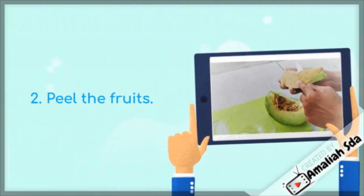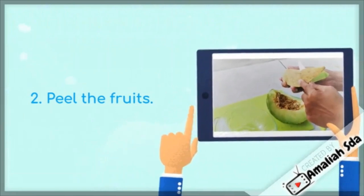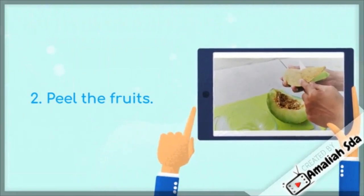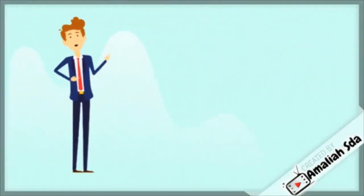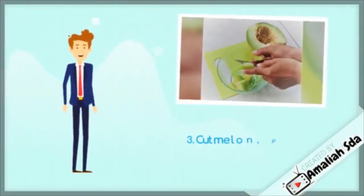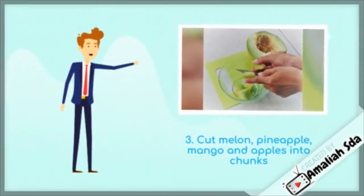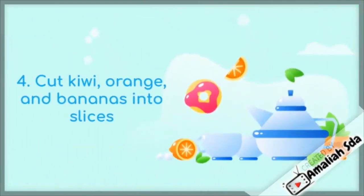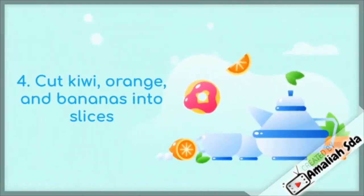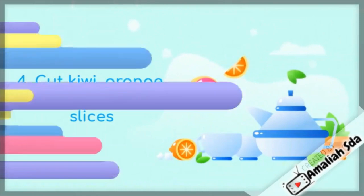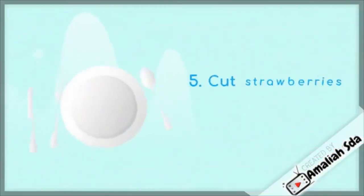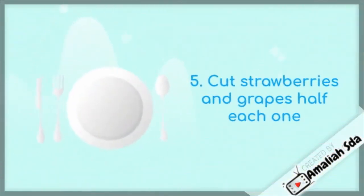The method of making fruit salad: first, wash all fruits until they are clean. Then peel the fruits except strawberries and grapes. After that, cut melon, pineapple, mango, and apples into chunks. Cut kiwi, orange, and bananas into slices.